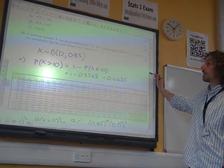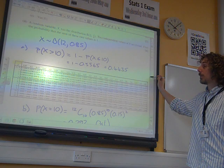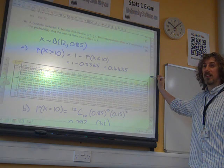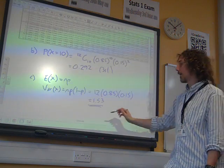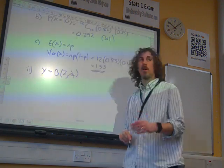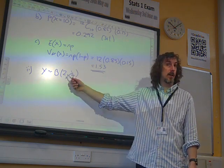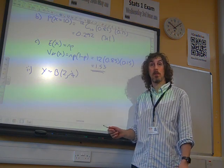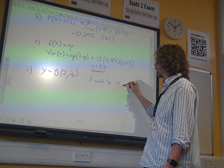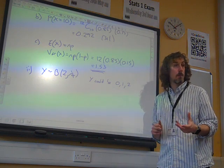There's a part two to this question which says, a random variable Y has the distribution binomial 2, a quarter. Two independent values of Y are found. Find the probability that the sum of these two values is 1. So let's think through what's going to happen with this one. We've got Y, Y is distributed binomially 2 and a quarter. What values, then, can Y possibly take? Y could be 0, 1 or 2. We are choosing two outputs of Y, two values of Y. And the result, the sum of them, is 1.